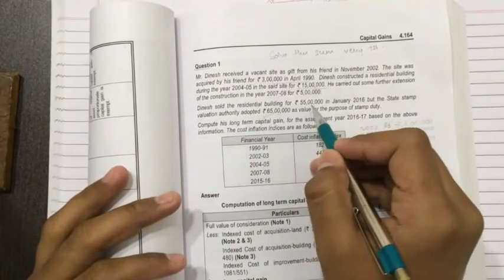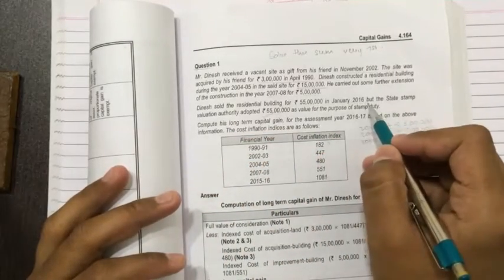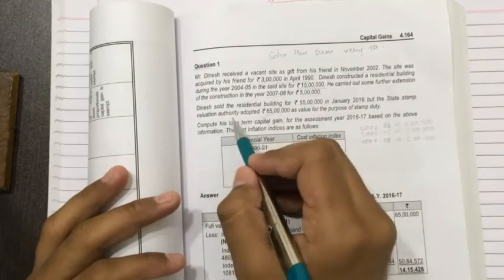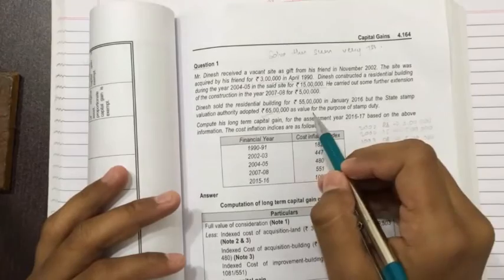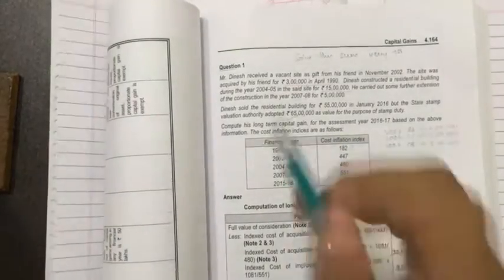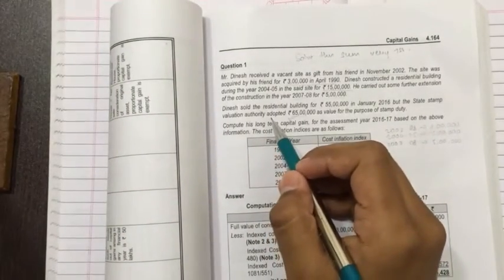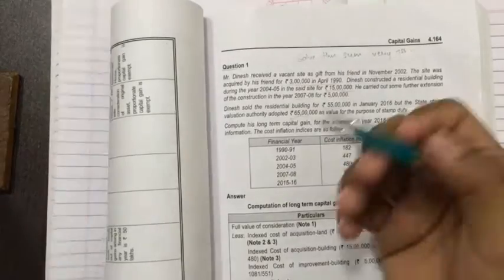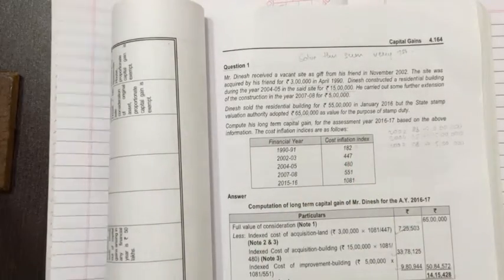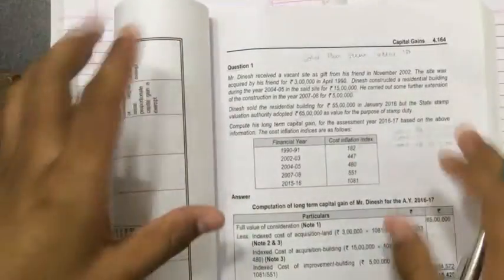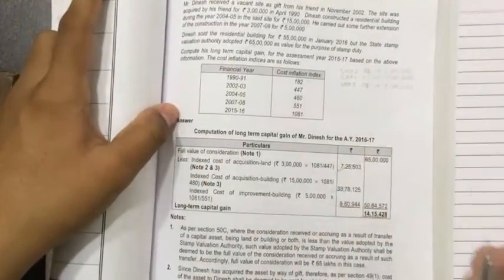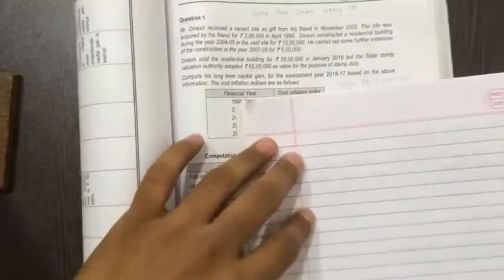Dinesh sold the residential building for 55 lakhs in January 2016. The stamp duty valuation authority adopted rupees 65 lakhs value for the purpose of stamp duty. This is stamp duty valuation, not stamp duty valuation assigned by the valuation officer. So how to calculate? First you make the format. First of all, what you have to do? I will solve one sum for you all, how to do. Firstly write...